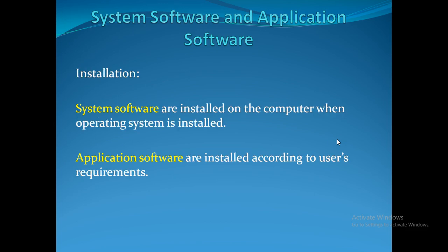Regarding installation: system software is installed on the computer when the operating system is installed. For example, when installing Android OS Oxygen 11 on your device, system software is also installed at the same time. Application softwares are installed according to user requirements — some people may need only LinkedIn, some may prefer Flipkart over other shopping apps, so installation depends on the user.